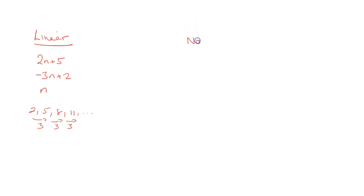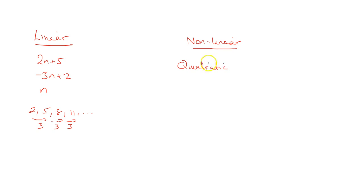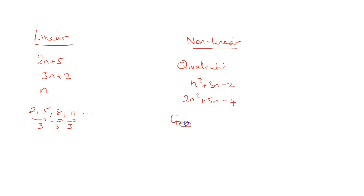In terms of nonlinear sequences, probably the most recognised one would be a quadratic one. That would be something like n squared plus 3n minus 2, or 2n squared plus 5n minus 4. We'll have a look at some examples of these in a moment. Other types of sequence are geometric — we have an example of that towards the end.